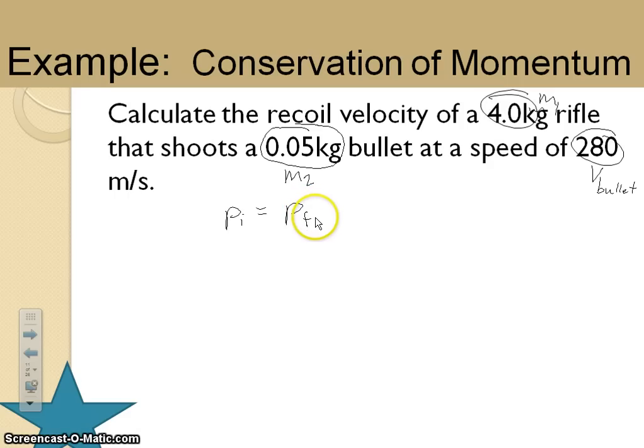Conservation of momentum tells us that the momentum before equals the momentum after. What's the momentum before? The gun hasn't been shot. Nothing is happening. So the momentum of the rifle and the momentum of the bullet are each zero.